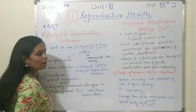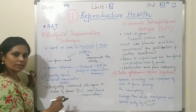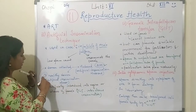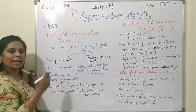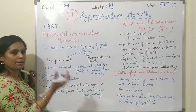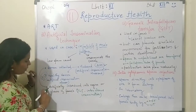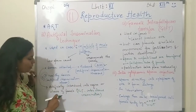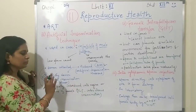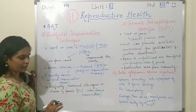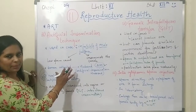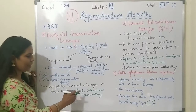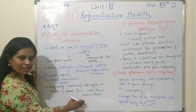Artificial insemination by husband is called AIH. The sperm will be artificially introduced into the vagina or uterus of the female. When the sperm is transferred to the uterus, it is called intrauterine insemination, or IUI.